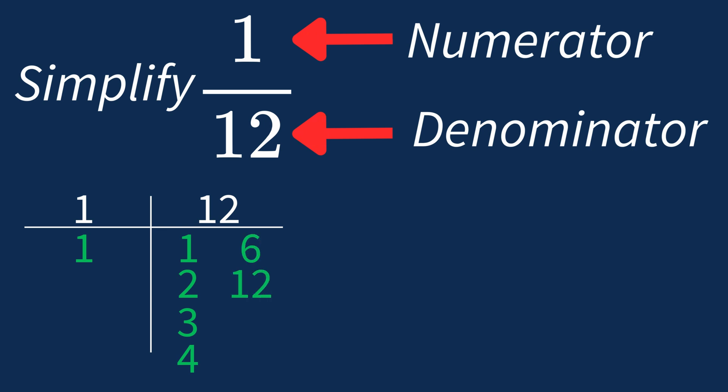So in this case, the largest common factor is 1. This means we'll divide both the numerator and denominator by 1 to see if anything changes.